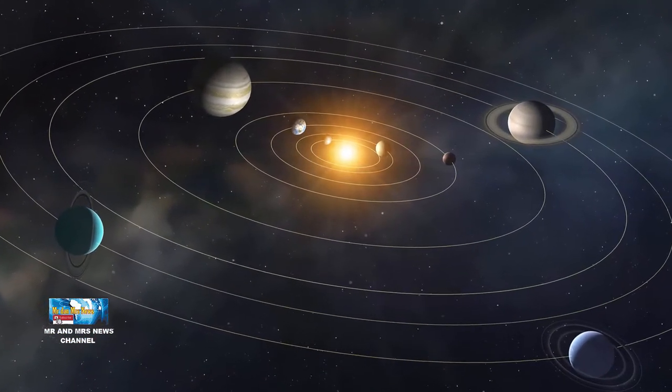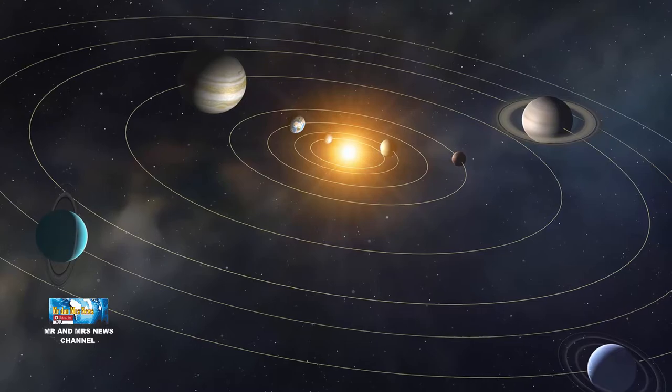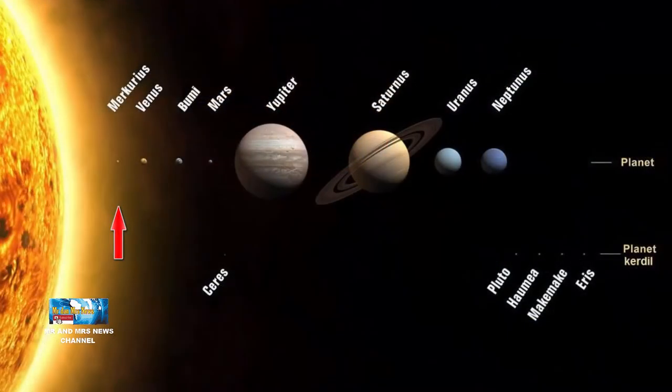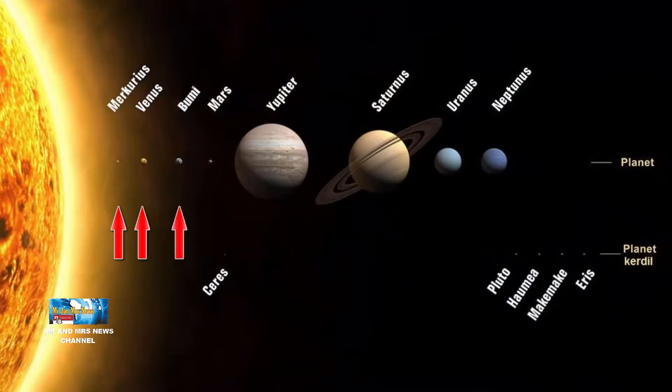Urutan planet-planet di tata surya mulai terdekat matahari hingga terjauh dari matahari adalah sebagai berikut: Merkurius, Venus, Bumi, Mars, Jupiter, Saturnus, Uranus, dan Neptunus.